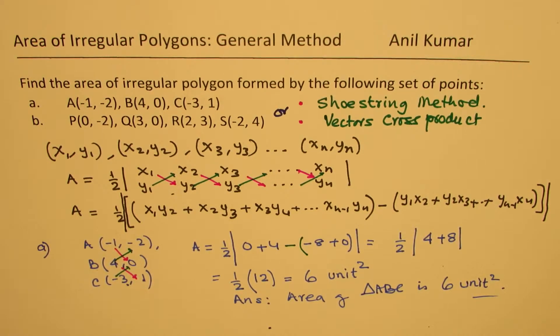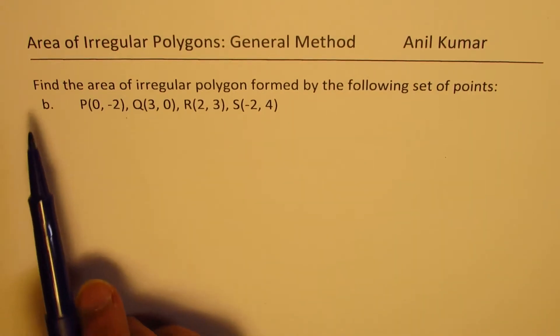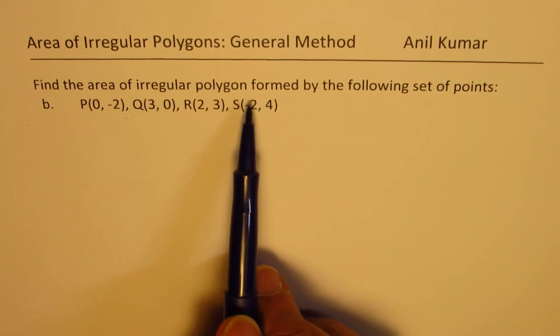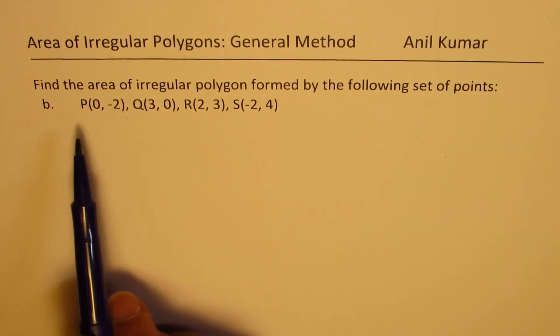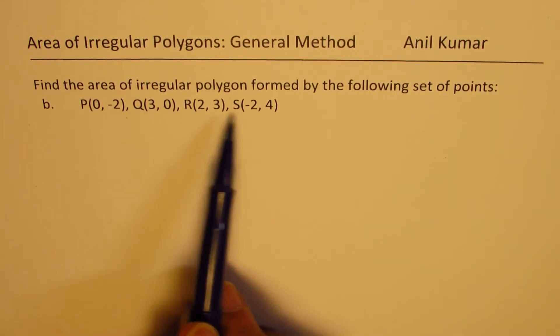I hope these steps are absolutely clear. Now, let's practice with the second example, the quadrilateral PQRS. I would like you to pause the video, do it, and then check with my solution. Now we need to find the area of irregular polygon formed by the following set of points, which are PQRS.